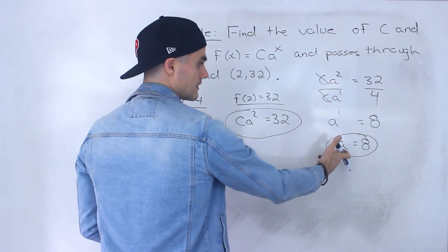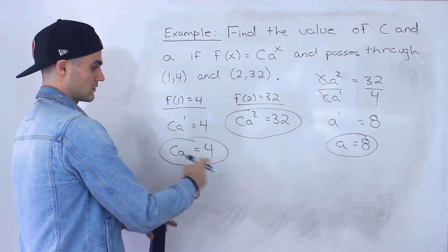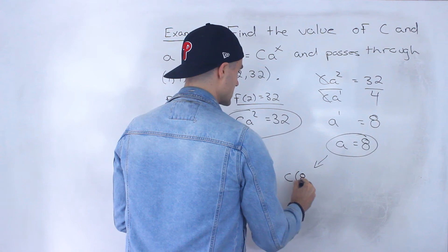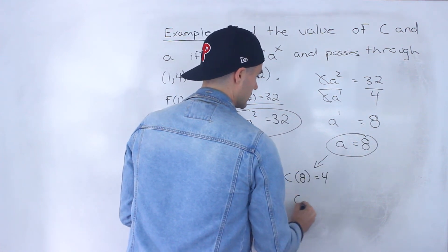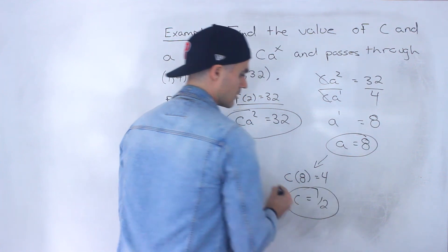And then what we can do is we could plug in this 8 for a either here or here. I feel like this one's the easier one to do. So then we'll have c times 8 equals 4. C equals 4 over 8, which is 1 half.